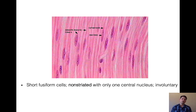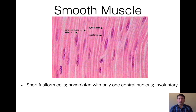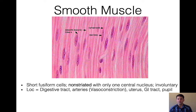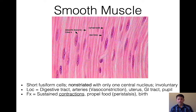Smooth muscle cells are short and football-shaped, non-striated with one central nucleus, and involuntary like cardiac muscle. We find smooth muscle in the digestive tract, blood vessels, and the uterus — where oxytocin stimulates these fibers to contract during birth, initiating positive feedback. Smooth muscle is really good at sustained contractions, whether for birth or moving material through the digestive system. It's also found in our pupils.